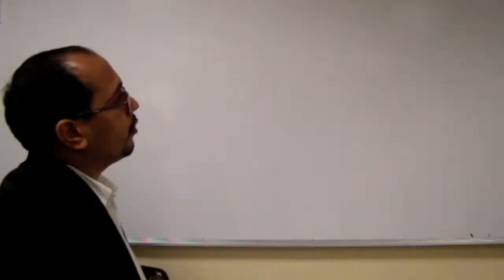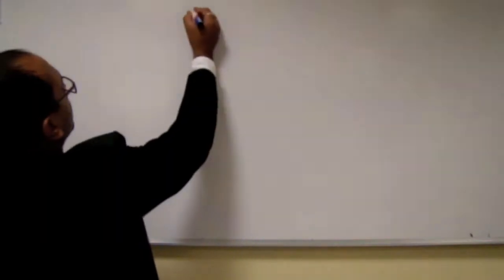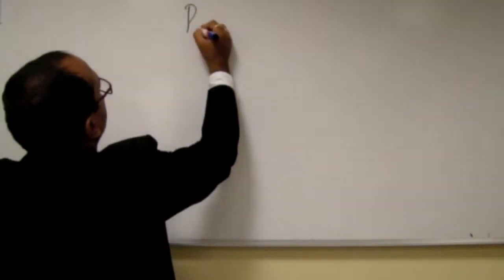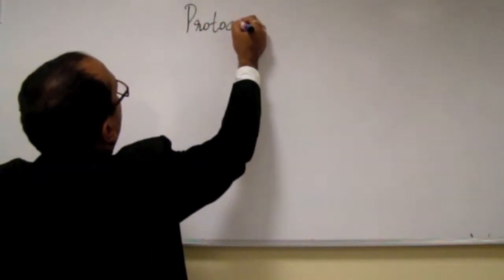Now we are done with properties, which was where we saw the wow factors — how the dot operator is used in Objective-C, how retain, release, how the ownership of content is maintained by the pointers. Now we are focused on one more interesting topic in Objective-C called protocols.